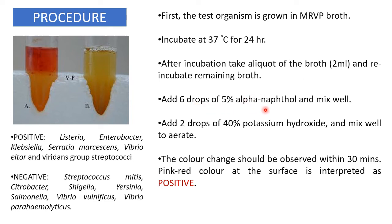Add 6 drops of alpha-naphthol and mix well, aerating the broth so the alpha-naphthol reacts well with the acetoin. Then add 2 drops of 40% potassium hydroxide, which converts the acetoin to diacetyl. Diacetyl reacts with the alpha-naphthol to produce a color change. Observe within 30 minutes — a pink to red color at the surface indicates a positive result.